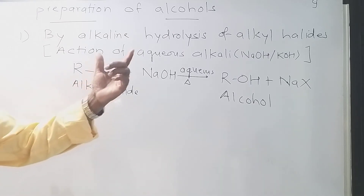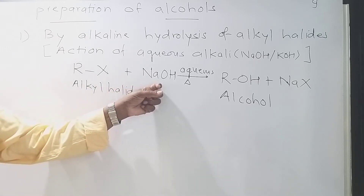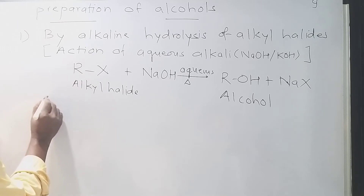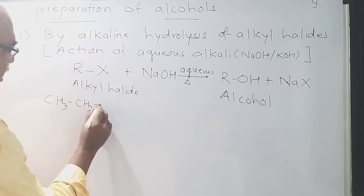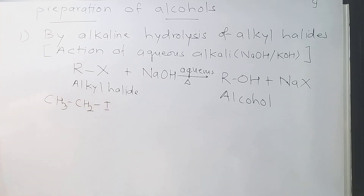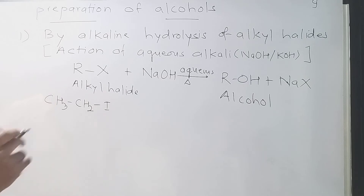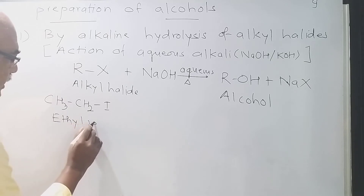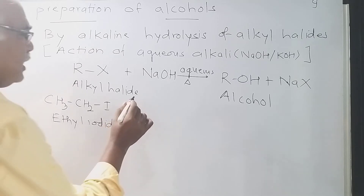To prepare alcohols, we treat alkyl halides with aqueous NaOH or KOH. For example, if we take ethyl iodide — CH3CH2I — and treat it with aqueous NaOH, we get the product.